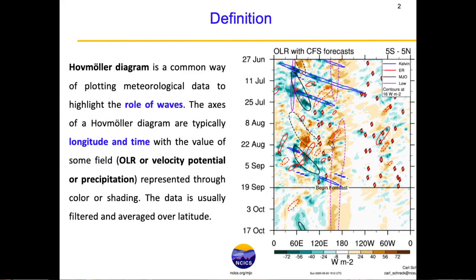Typically what you have on these charts or diagrams is on the x-axis is the longitude and on the y-axis is the time. The contours — shown here in green and brown — are representative of some meteorological field, either the outgoing longwave radiation, or velocity potential, or precipitation. The data presented here is usually filtered and averaged over latitude. In this case, what we are seeing is the forecast of outgoing longwave radiation from the CFS model — the Climate Forecasting System model — averaged between 5°S and 5°N in the latitudinal direction and plotted as a function of longitude and time.